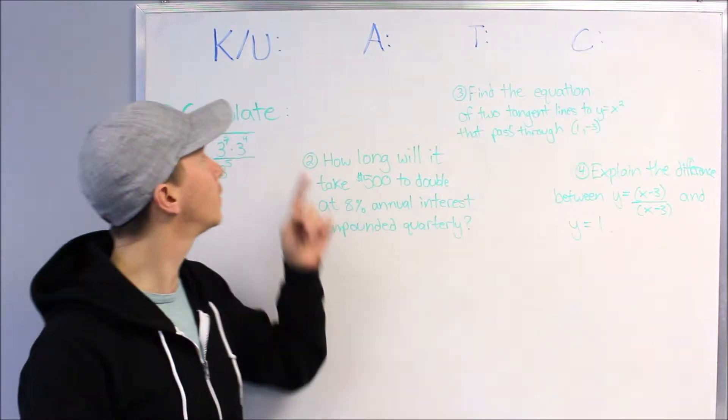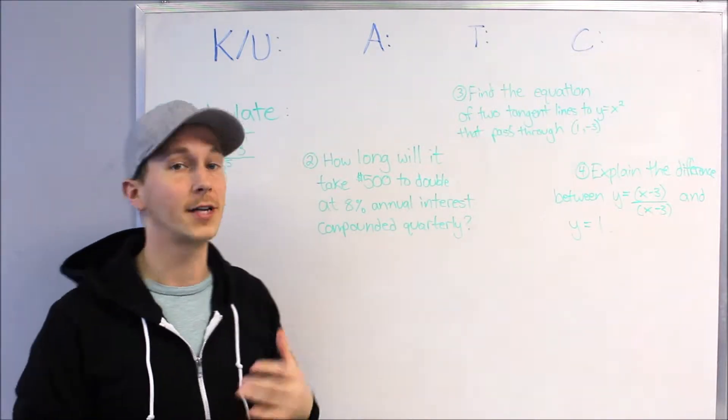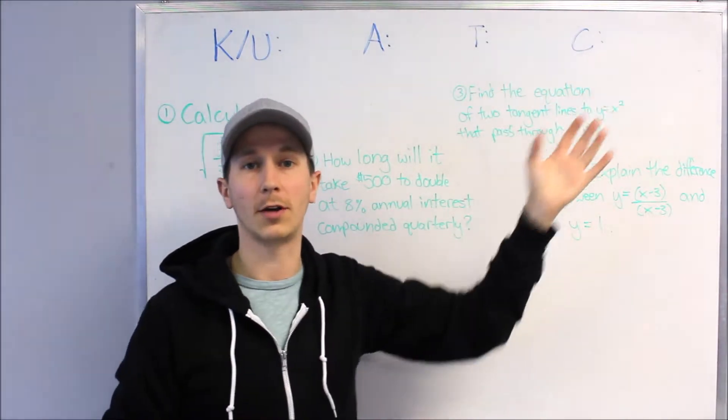It's actually broken down into four categories: K, U, A, T, and C. You might see that at the top of every test. KU is Knowledge Utilization, Application, Thinking, and Communication.